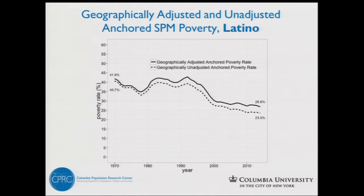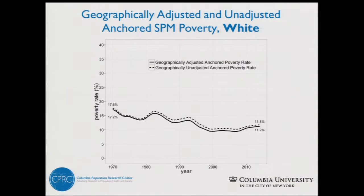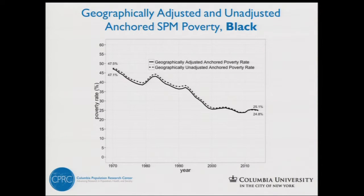Moving on to other demographic groups that we think are important and interesting — this dovetails nicely with Sarah's presentation. For Latinos, geographically adjusting the supplemental poverty measure actually shows an increase in poverty, because Latinos tend to live in relatively expensive states like California. The geographical adjustment doesn't really matter for some of the other demographic groups, partly because they're more randomly distributed around the country and exposed to a larger variety of housing costs. For whites we don't see a huge difference, and for African Americans poverty goes down a little bit when we geographically adjust.